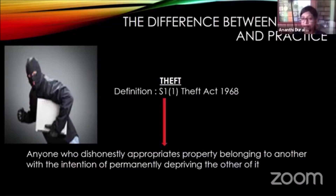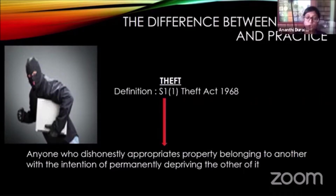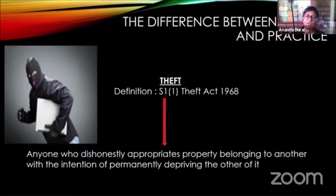So let's look at theft. Section 1, subsection 1 of the Theft Act defines the offence and says that anyone who dishonestly appropriates property belonging to another with the intention of permanently depriving the other of it commits theft. And the requirements I told you — the actus reus and mens rea — where do they come from? They come from this definition.